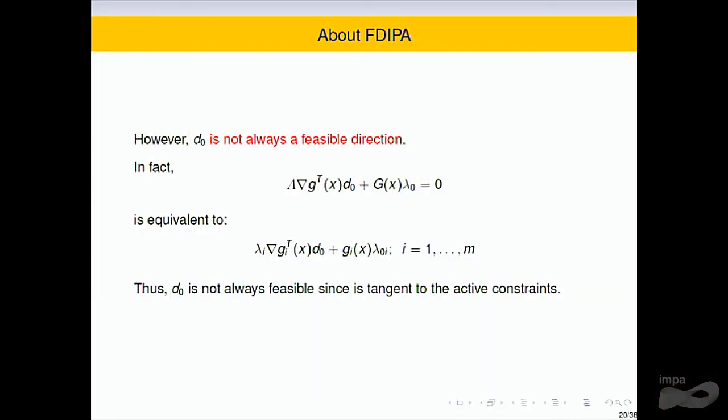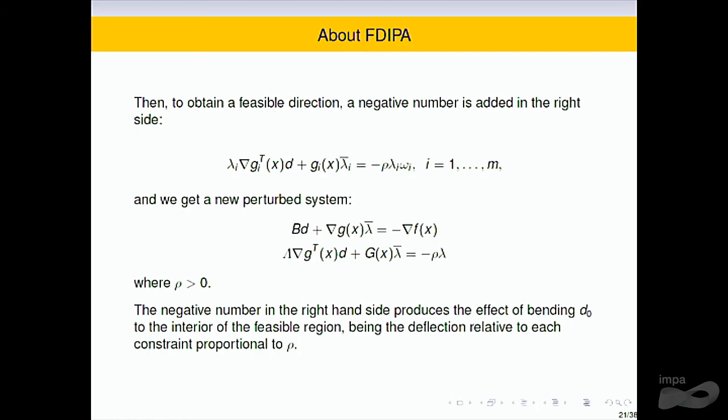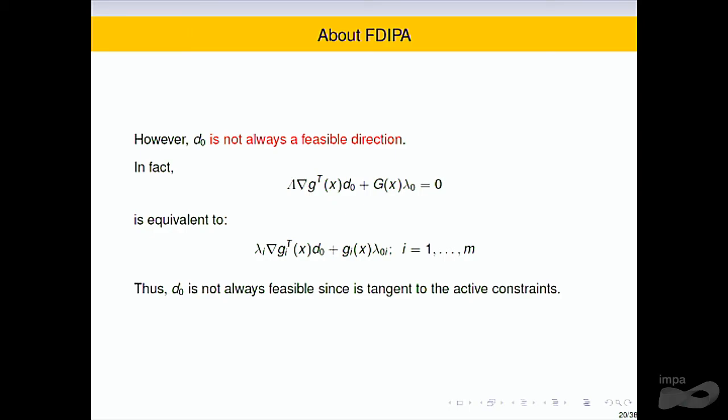However, D0 is not always a feasible direction. As we saw in the drawing before, when we are on the boundary of the feasible region, D0 is tangent to the feasible region, and depending on the curvature, it can be infeasible. Looking at the equations component by component, we have one equation per constraint. We can see that when G_i equals zero, then D0 is orthogonal to the gradient of G_i — D0 is tangent. That is why D0 is not always a feasible direction.